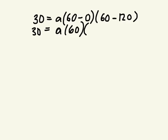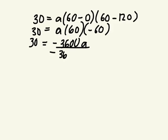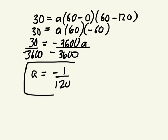60 take away 120 is, what's negative 60 times negative 60? Negative 3,600. A divide by negative 3,600. Put this in lowest terms. Let's leave it as a fraction. Negative 1 over 120 is your answer.